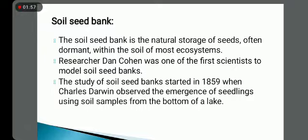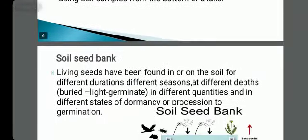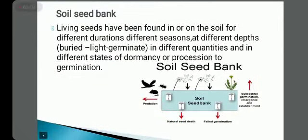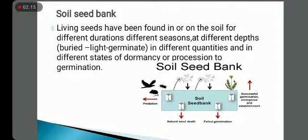The study of soil seed banks started in 1859 when Charles Darwin observed the emergence of seedlings using soil samples from the bottom of a lake. Living seeds have been found in or on the soil for different durations, different seasons, at different depths, in different quantities, and in different states of dormancy or progression to germination.